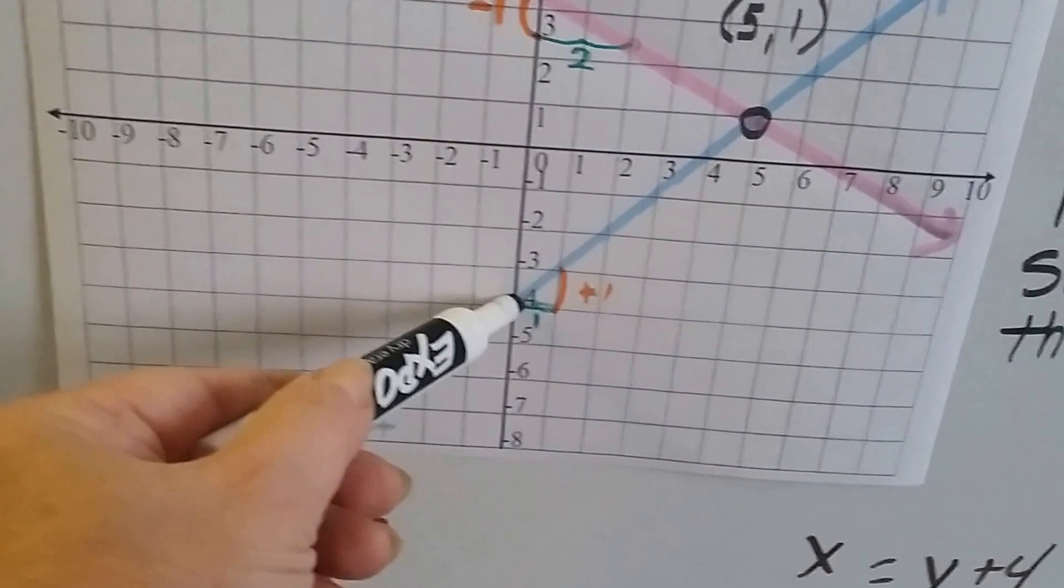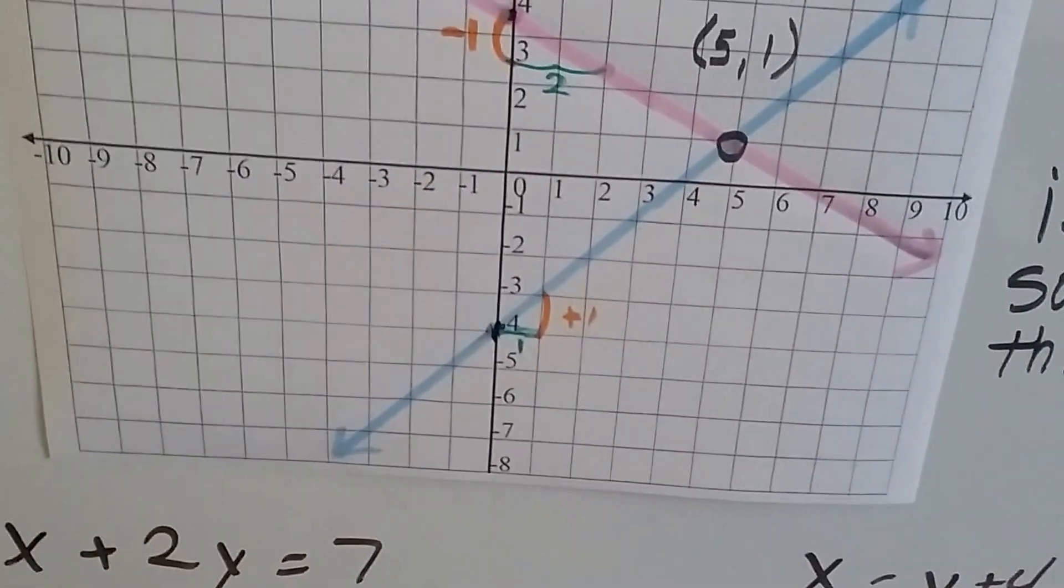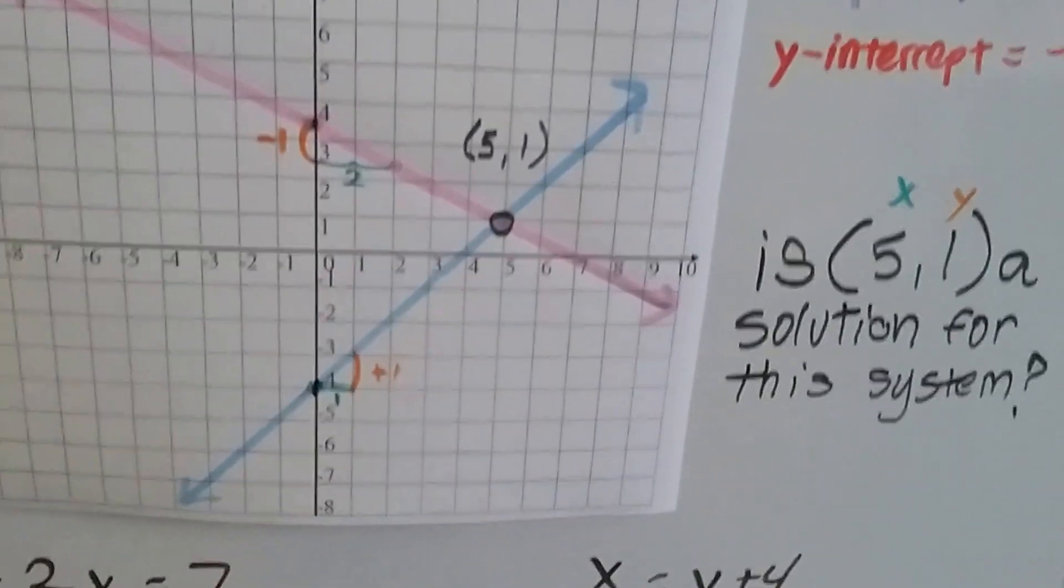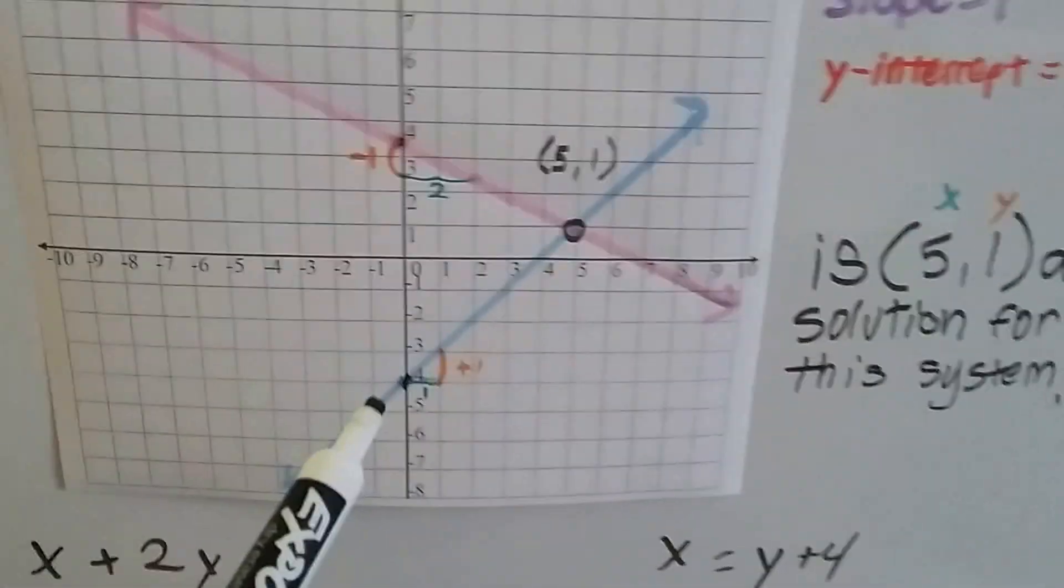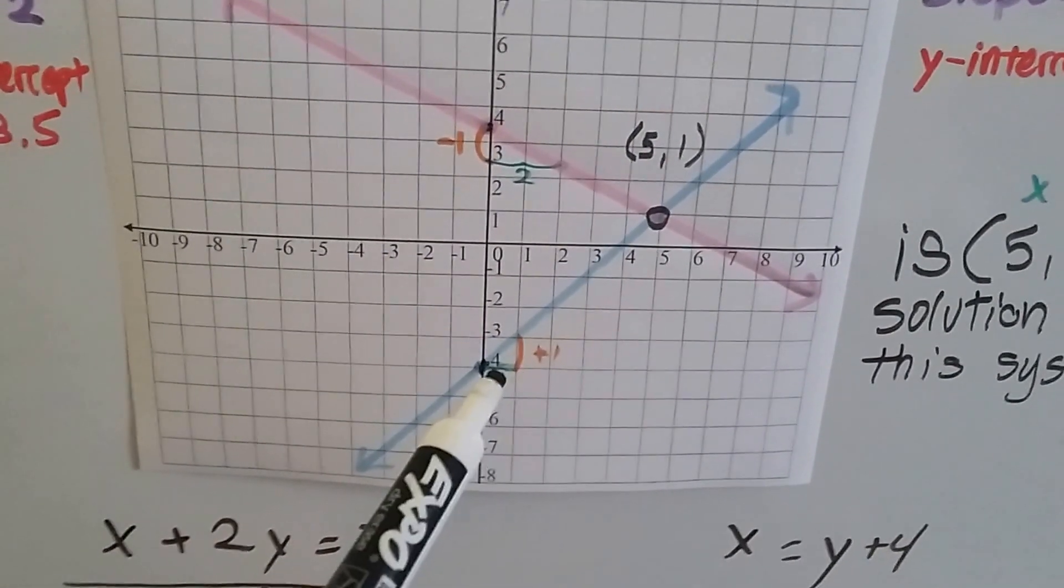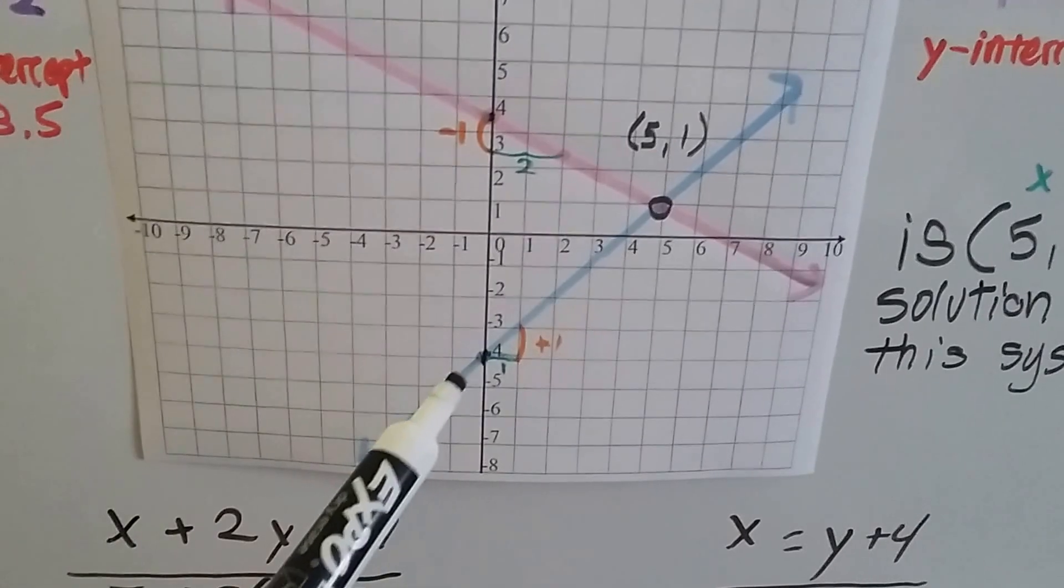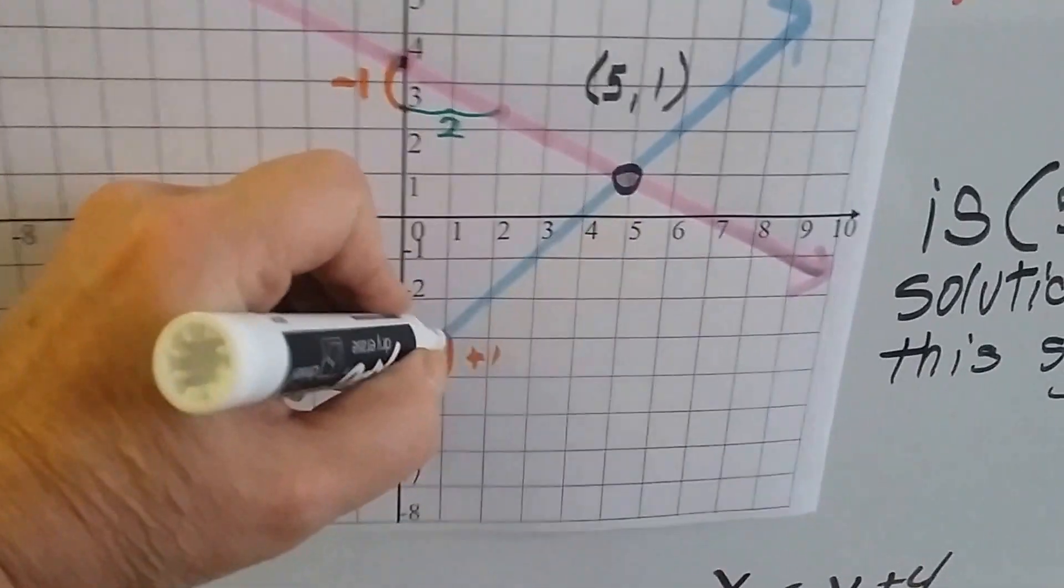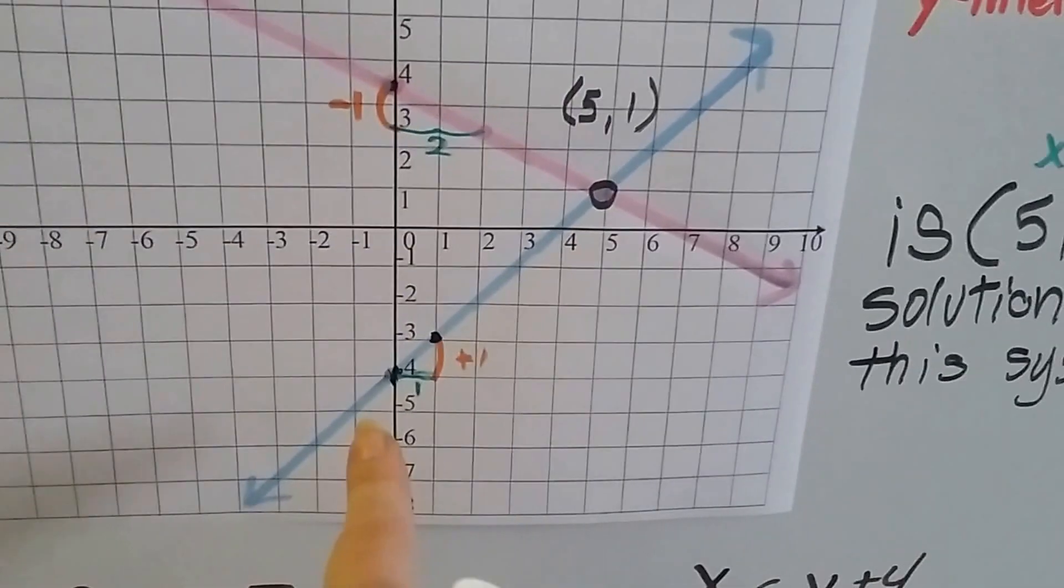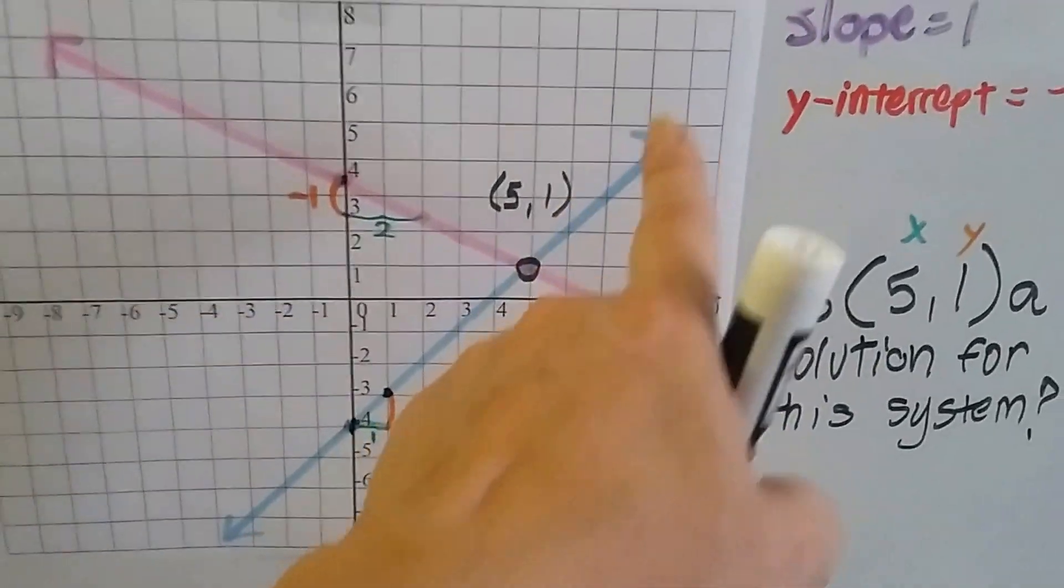So it's got to go through that point. And then it's going to have a rise of 1 over 1 as a slope 1. The rise is 1 and the run is 1. So that means the next point is going to be right here. So in order to graph this line, we come up this way with this blue line.